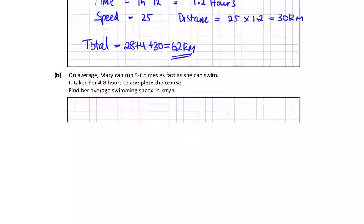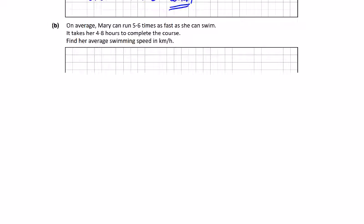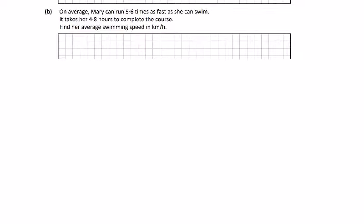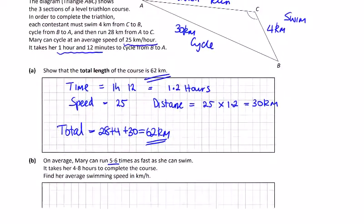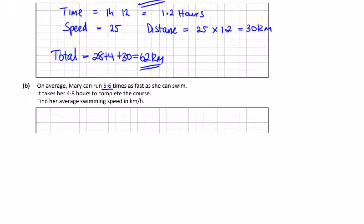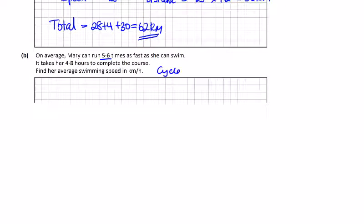Part 2. On average, Mary can run 5.6 times as fast as she can swim. It takes her 4.8 hours to complete the course. Well, she's already cycled for 1.2 hours. So 4.8 minus 1.2 - the total for the run and the swim is 3.6 hours.